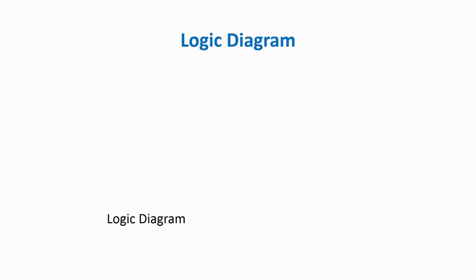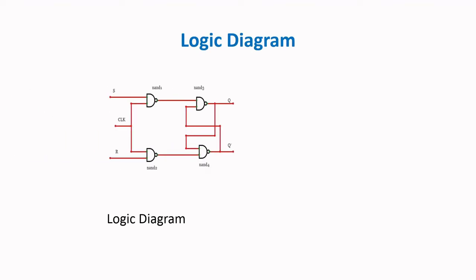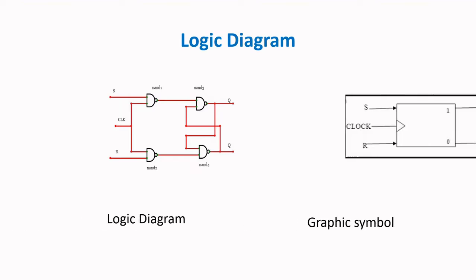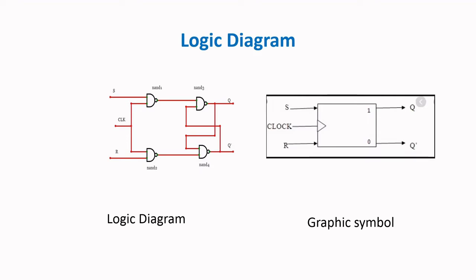The logic diagram of the SR flip-flop is given below. The input for the first NAND gate is S and clock, and for the second NAND gate is R and clock. Another two NAND gates are interconnected in this logic diagram. The symbol of the SR flip-flop has two inputs, S and R, one clock input, and two outputs, Q and Q-bar.